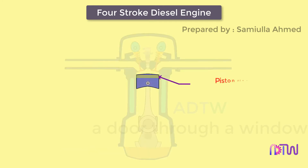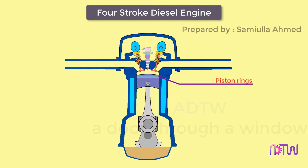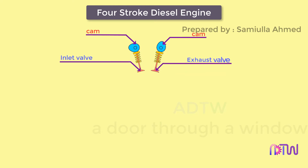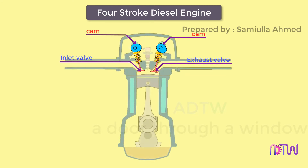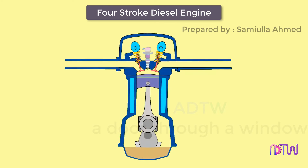Piston rings are fitted into slots around the piston and provide a tight seal between the piston and the cylinder wall, preventing leakage of combustion gases. The camshaft and cams control the opening and closing of the intake and exhaust valves.